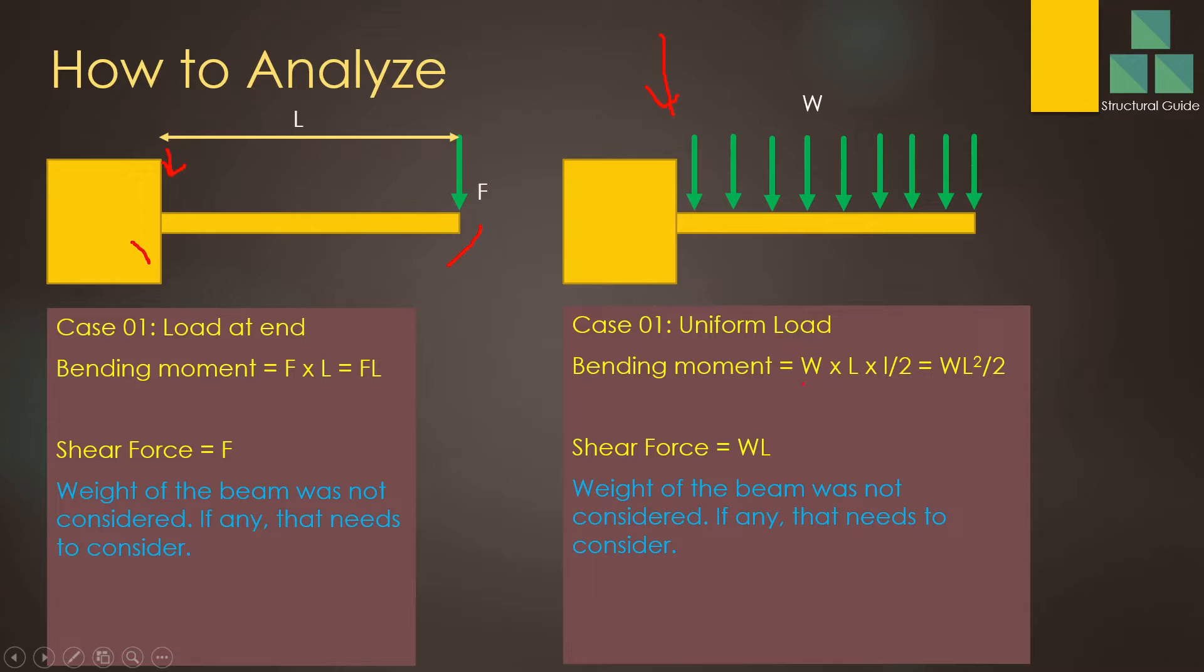Here you know the UDL, W. W times L is the total load applied on the beam, divided by 2. The length L divided by 2 gives the total bending moment. So the bending moment is W L squared over 2.